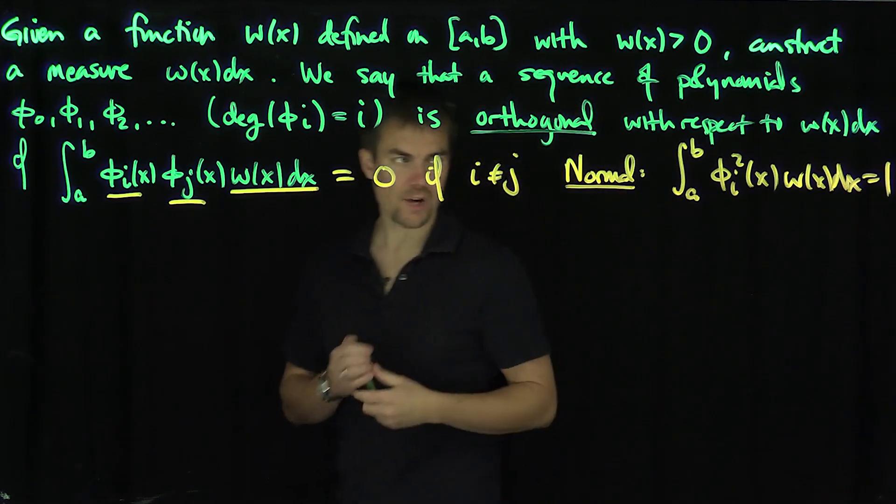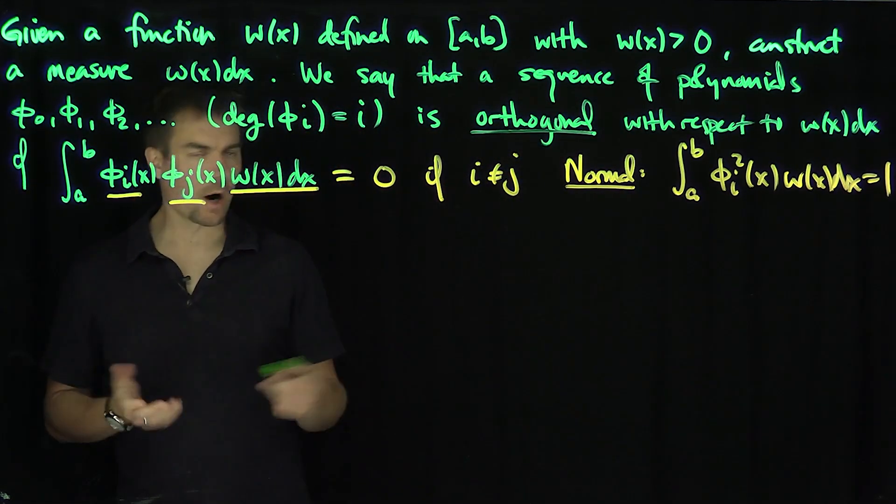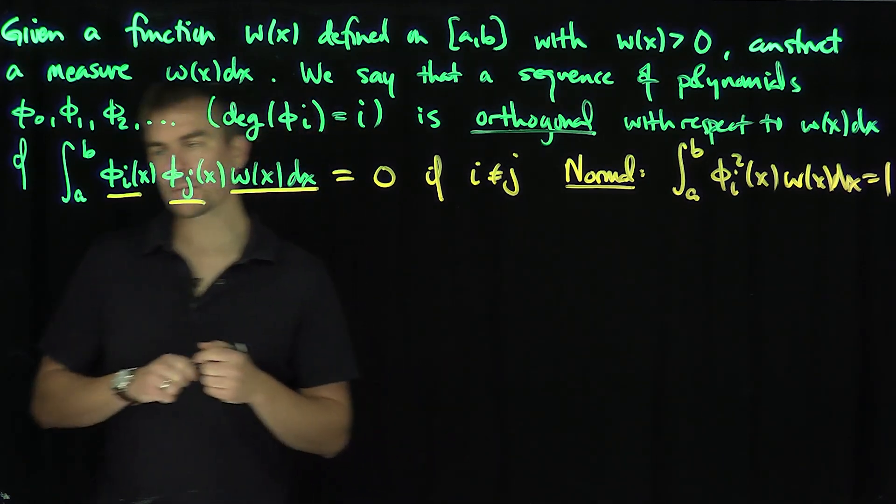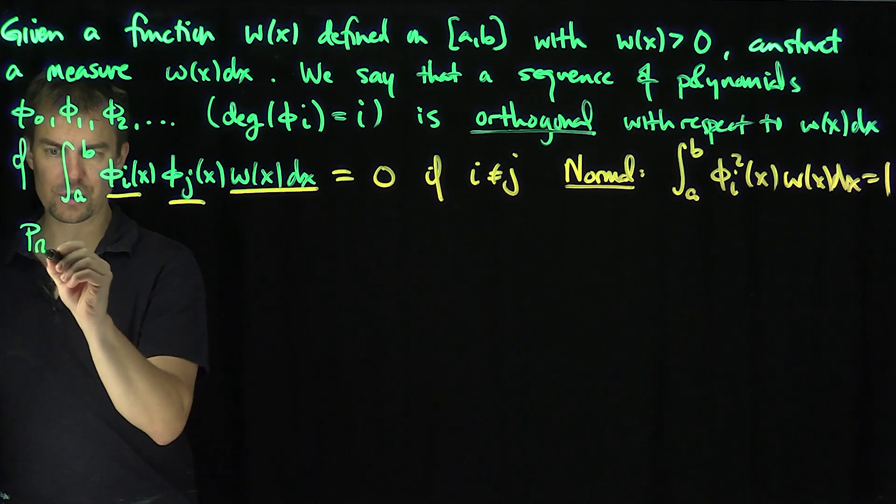Typically we'll leave the normalization out to make things easier to compute. So these are what orthogonal polynomials are, with respect to a certain measure. Now, here's a proposition: